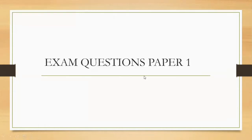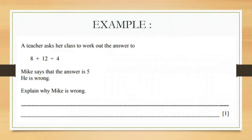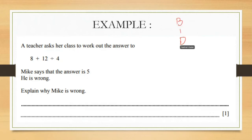Let's look at example questions for Paper 1 under the Numbers subtopic. For example, a teacher asks her class to work out 8 plus 12 divided by 4. Mike says the answer is 5. He is wrong — explain why. This question falls under the topic BODMAS, or order of operations. Let's talk about BODMAS: Bracket, Order of operation, Division, Multiplication, Addition, and Subtraction.